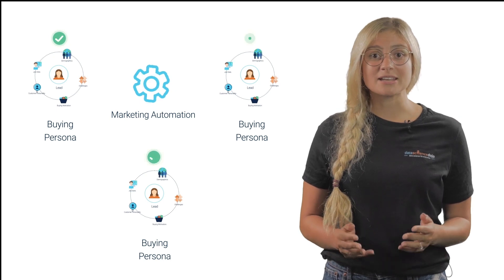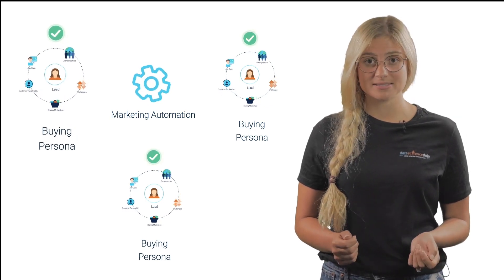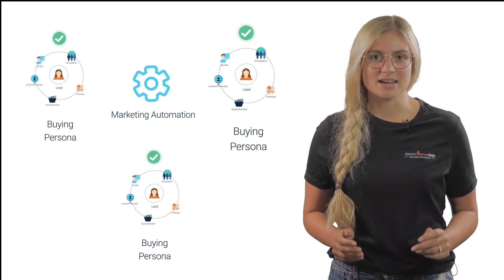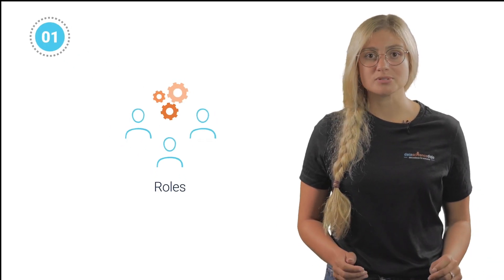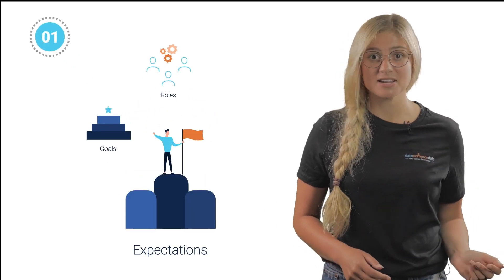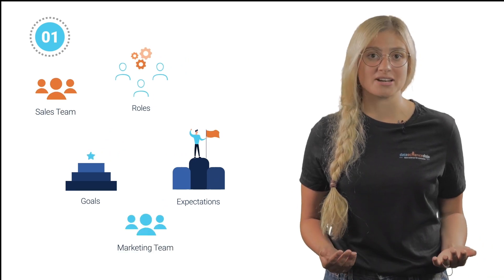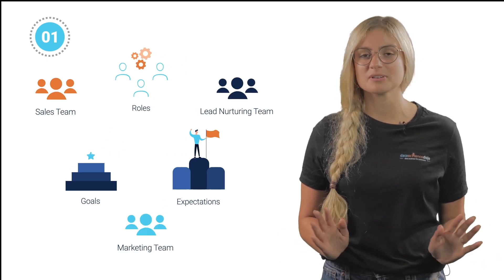Automation will allow ease in the lead nurturing process. Of the many distinct types of lead nurturing strategies, five of them are aligning sales and marketing strategies. Align the roles, goals, and expectations between the sales, marketing, and lead nurturing teams to avoid confusion.